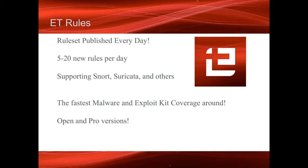With the Emerging Threats Pro rules and our open rule set, we publish every day — looking at 5 to 20 new rules every day. For every sample that comes through that does not automatically hit on an existing rule, we apply humans to it: we group, triage, and write new signatures. That's how we're putting out 5 to 20 new rules every single day. The performance impact of adding up to 50 or 100 new rules a week is really negligible, as long as they're written well, which we work very hard on in our daily QA process.